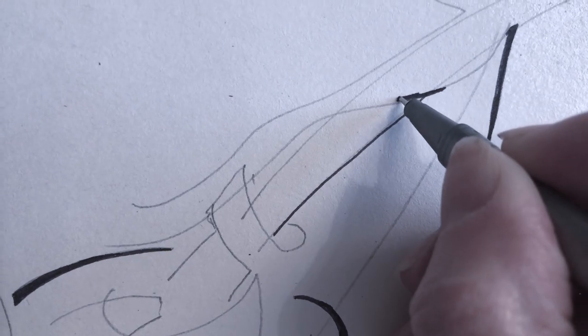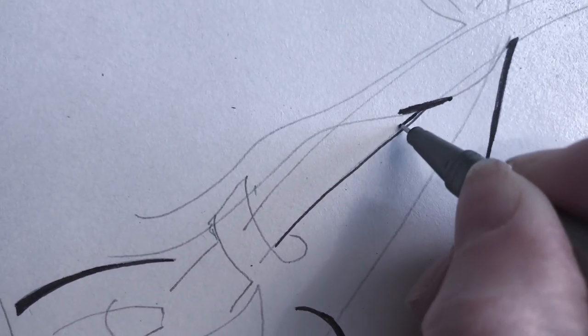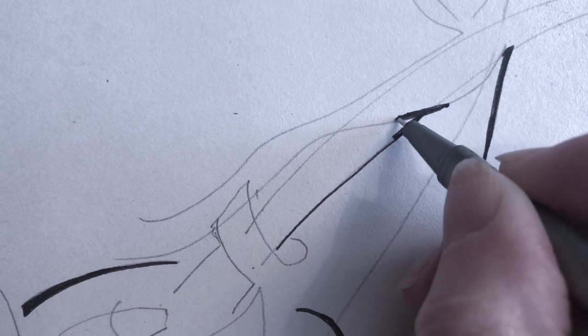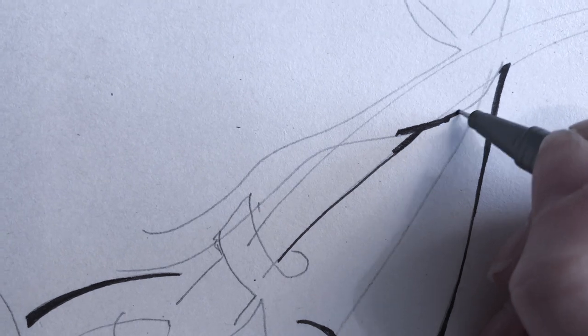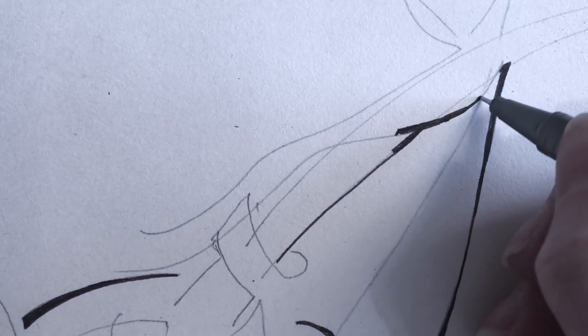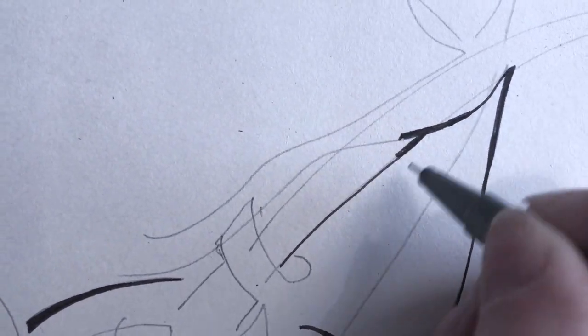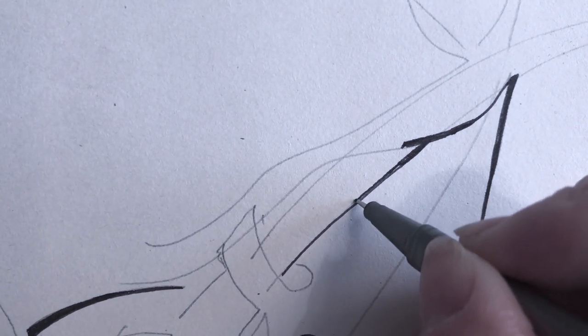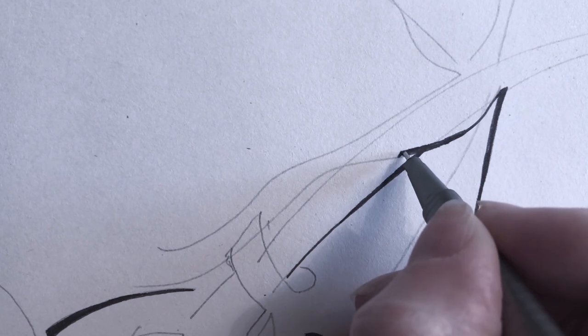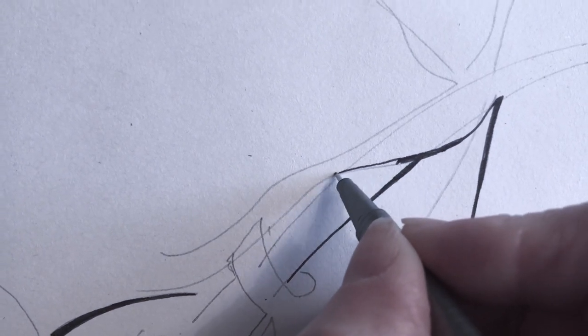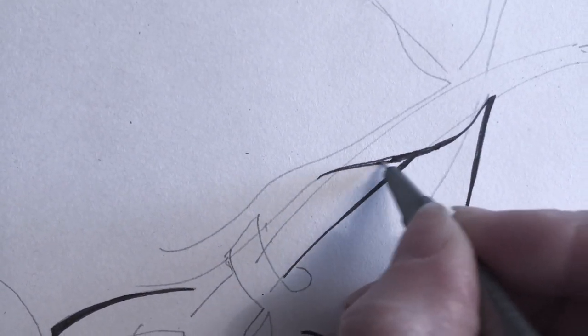So make that T thicker, so you can even do yourself a T like that but then you don't want the ends, you don't want to see the ends, so then you fade those ends out to a single line like that. So it's a gradual change from the thick line at the junction to going back to your single line down here.